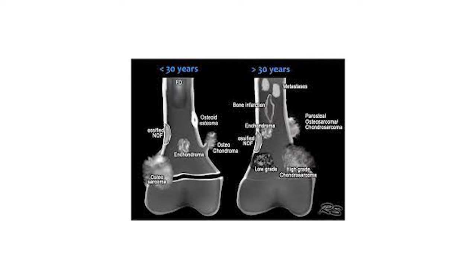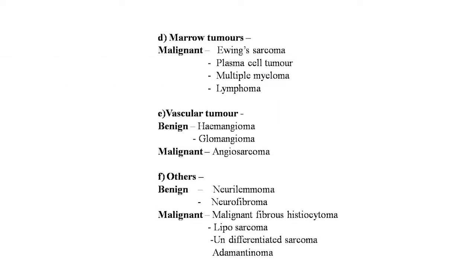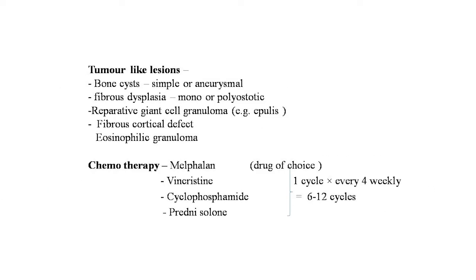Marrow tumors include malignant Ewing's sarcoma, plasma cell tumor, multiple myeloma, and lymphoma. Vascular tumors originate from vascular tissue: benign types are hemangioma and glomangioma; malignant is angiosarcoma. Other bone tumors include malignant fibrous histiocytoma, liposarcoma, undifferentiated sarcoma, and adamantinoma. Tumor-like lesions include simple or aneurysmal bone cyst, fibrous dysplasia (mono- or polyostotic), giant cell granuloma (epulis), fibrous cortical defect, and eosinophilic granuloma.